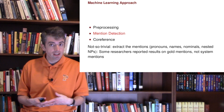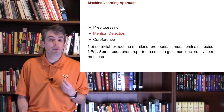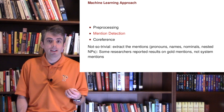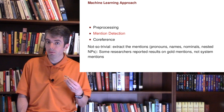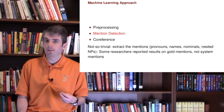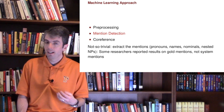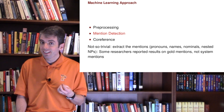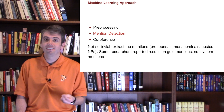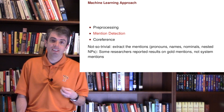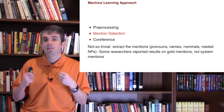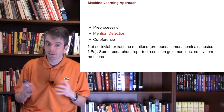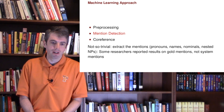One important thing to pay attention to is what researchers use for mention detection in coreference papers. Are they using a real system deployable in the real world, or gold mentions from a human annotator? If you report on gold mentions, you typically get much better coreference accuracy, because named entity recognition is not perfect, and small errors in NER can turn into really big errors in the coreference task.